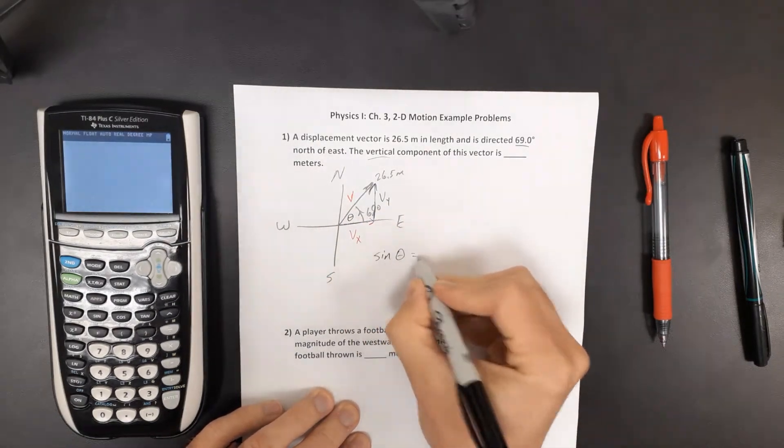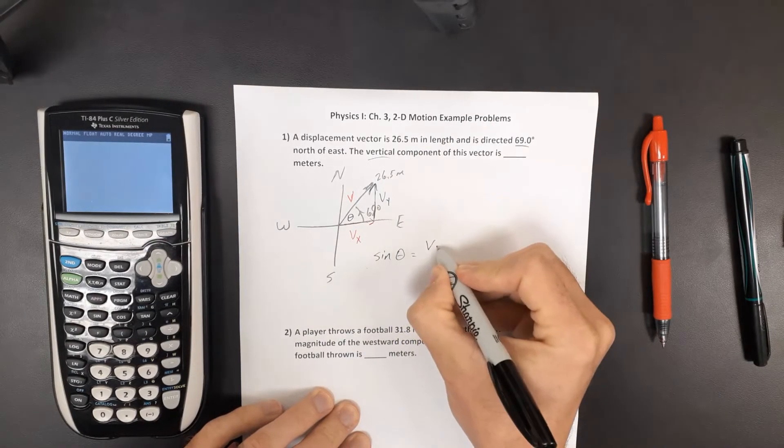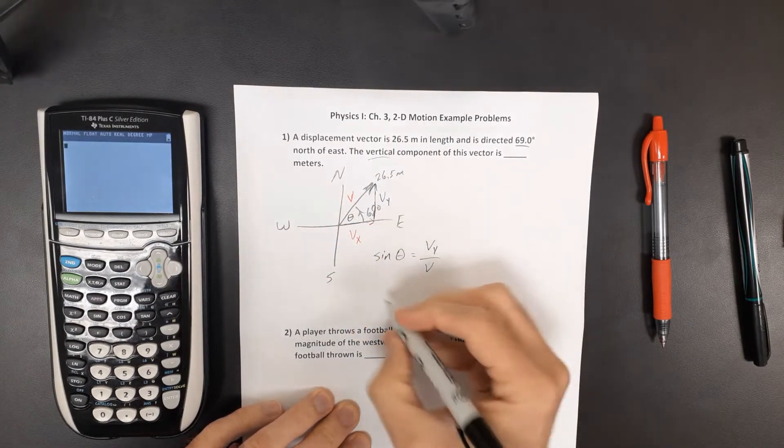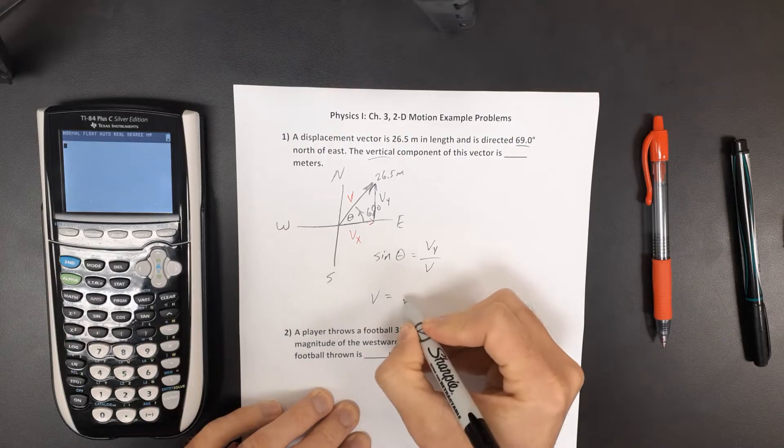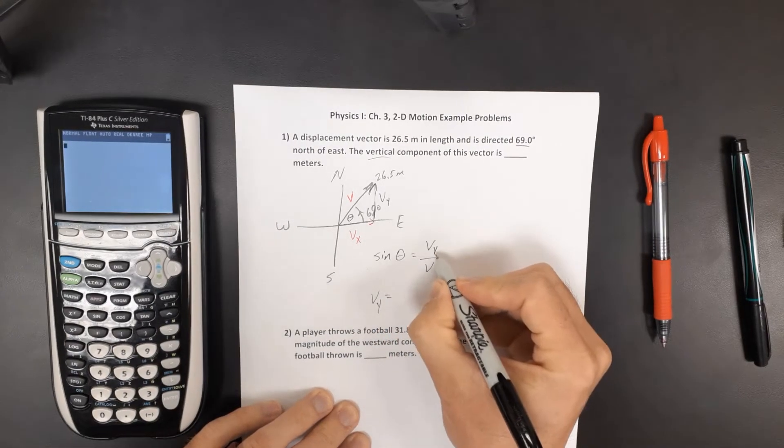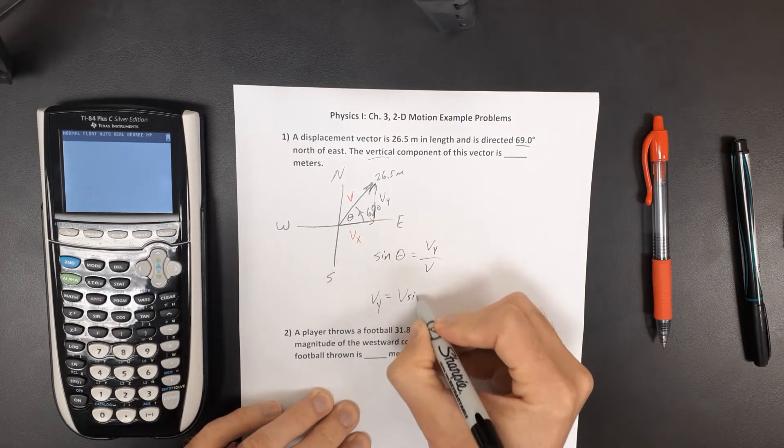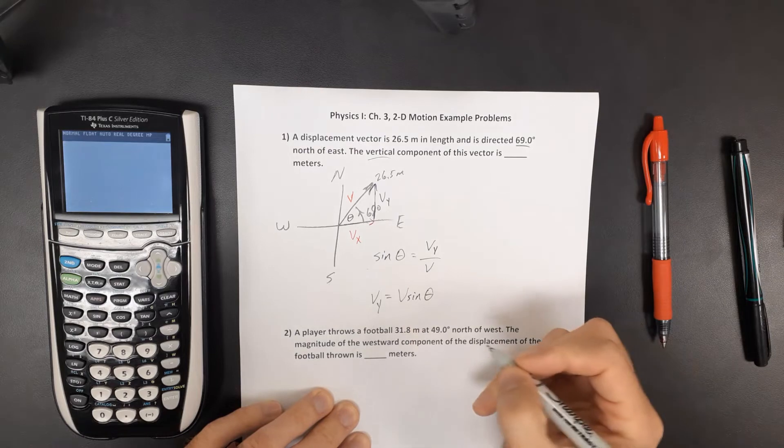But the sine of theta would be the opposite side, the y component or the vertical component divided by that vector. So the y component of that vector would be the vector times the sine of theta.